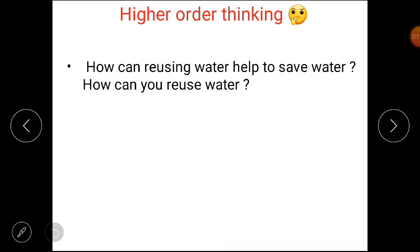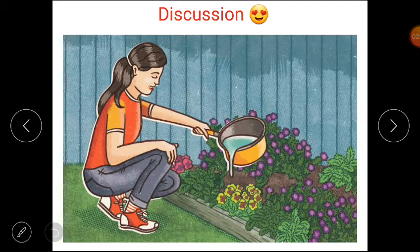Now, it's time for higher order thinking question. Question is, how can reusing water help to save water? How can you reuse water? Let's discuss. Firstly, reusing means using again. And yes, we can reuse water in many ways. We can wash vegetables in a bowl, not in running water. We can use the remaining water in garden or for washing the floors. The remaining water can be used to wash the floor and the garden to water the plants.